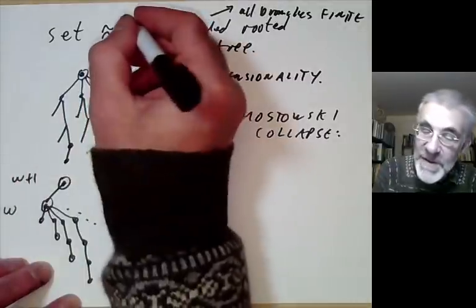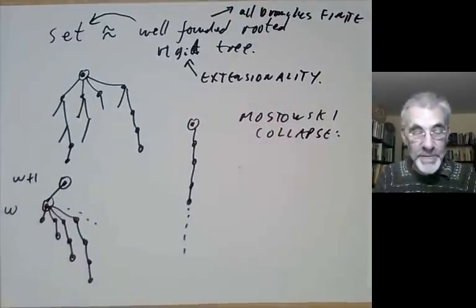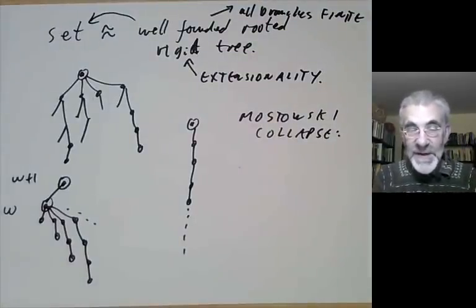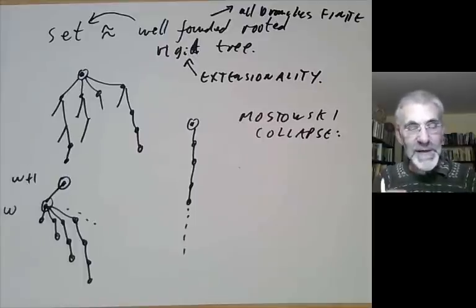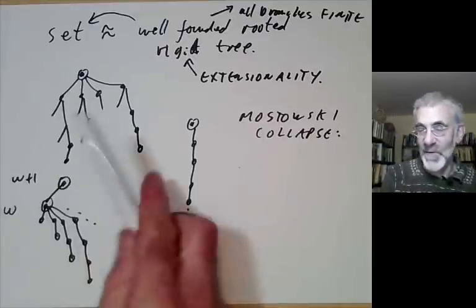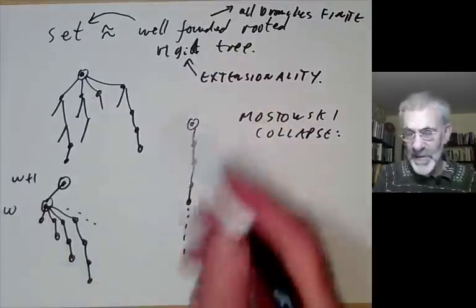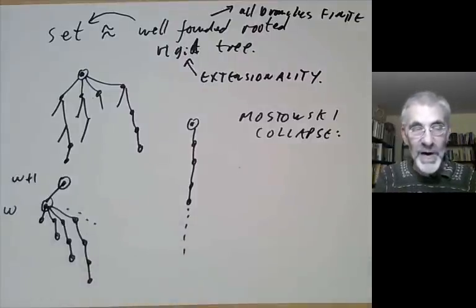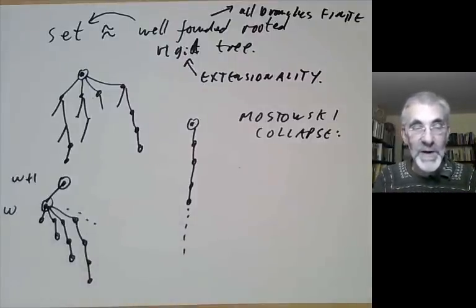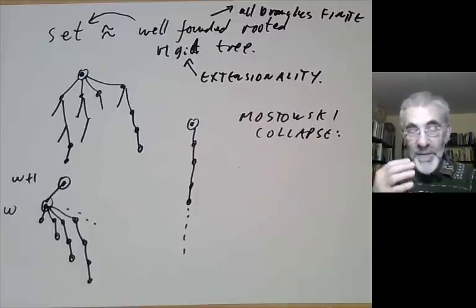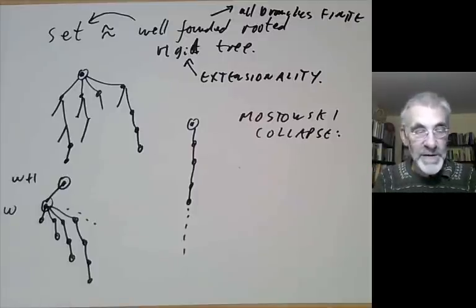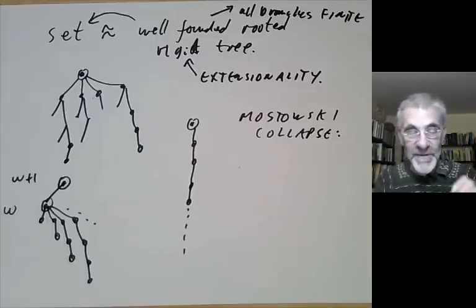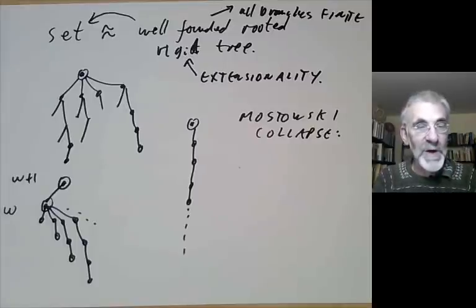Conversely, if you've got a well-founded set, you can get a tree out of it by reversing this process. So the Mostowski collapse theorem is essentially a way of saying that sets correspond to well-founded rooted trees. The axioms of extensionality and foundation together in some sense say what a set is — roughly a special sort of tree. All of the remaining axioms of Zermelo-Fraenkel set theory force the existence of certain sorts of sets. In the next lecture we'll start with the simplest of these: the axioms of pairing and union.